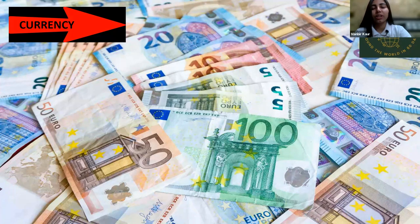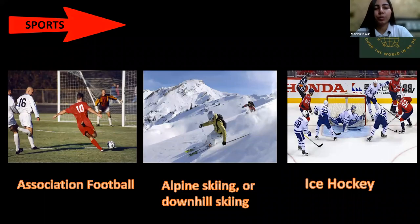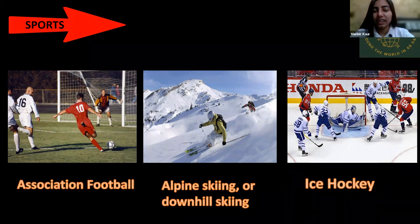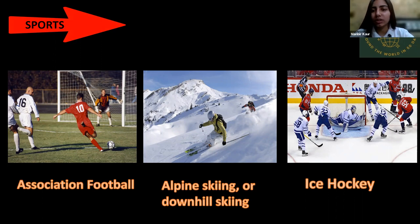Now we'll talk about a few sports which are highly played in Austria. The first is association football, the second is alpine skiing or downhill skiing, and the third is ice hockey. These three are the major sports played in Austria.